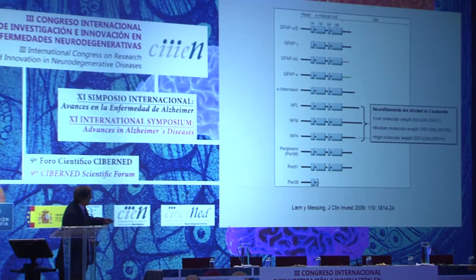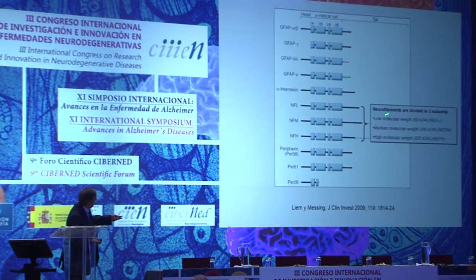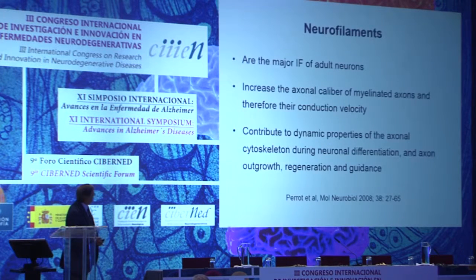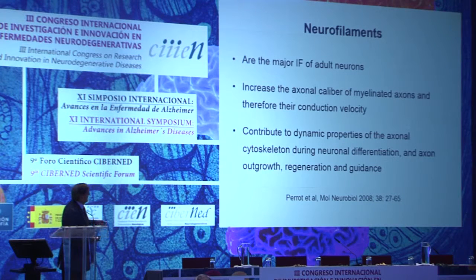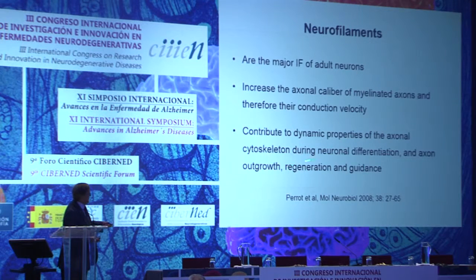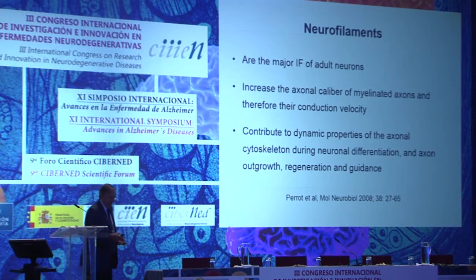The neurofilaments are divided in three subtypes according to molecular weight: low, median, and high molecular weight. Neurofilaments are the major intermediate filaments of adult neurons. They increase the axonal caliber of myelinated axons and therefore increase the conduction velocity, and they contribute to the dynamic properties of the axonal cytoskeleton during neuronal differentiation and axonal growth, regeneration, and guidance.